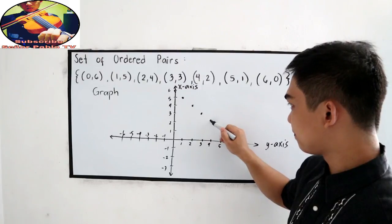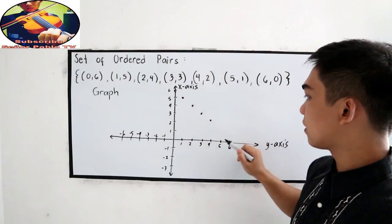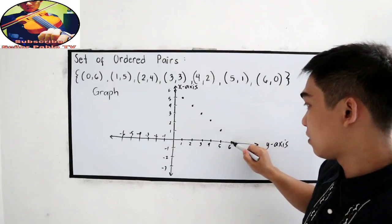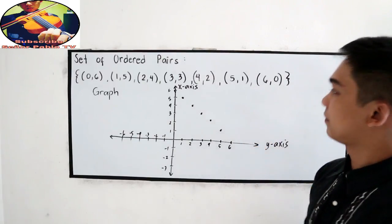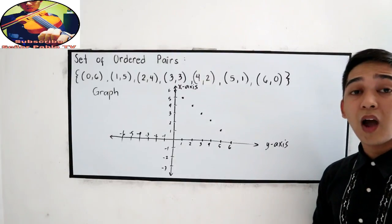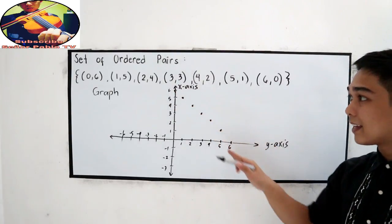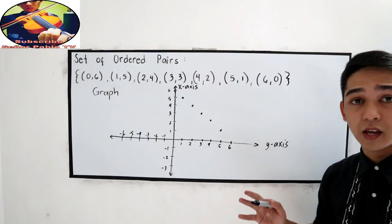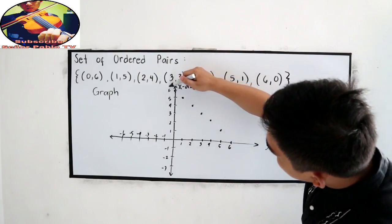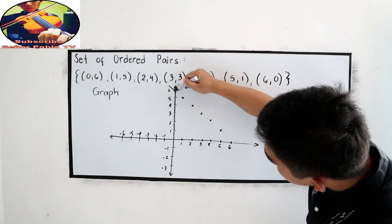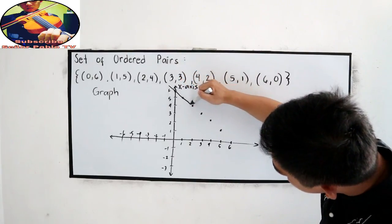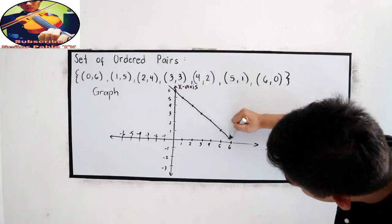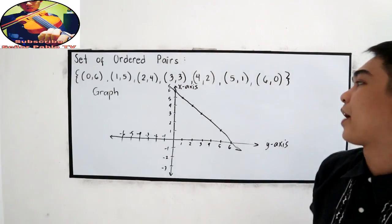Next, (4,2). Next, (5,1). And last, 6 for X and 0 for Y. So, this is now our plotted ordered pairs. We plot it in our rectangular coordinate system. Then, we can connect the dots or the points. This is now our graph.